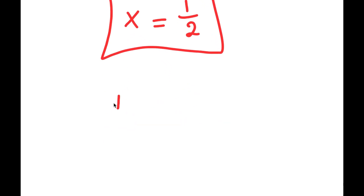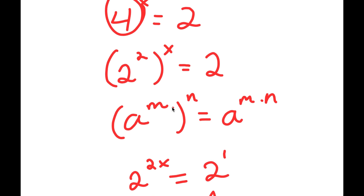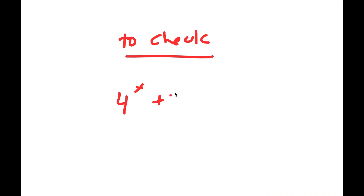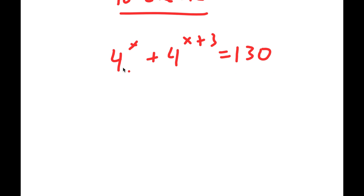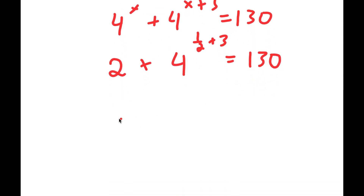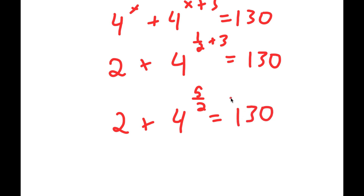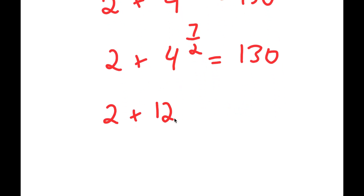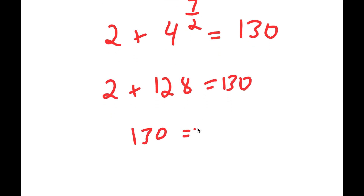To check: the original equation was 4 to the power of x plus 4 to the power of x plus 3 equals 130. With x equals one half, 4 to the power of one half is 2. And 4 to the power of one half plus 3 is 4 to the power of 7 over 2, which equals 128. So 2 plus 128 equals 130, and I get 130 equals 130. ✓